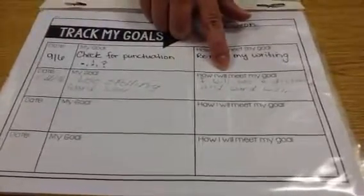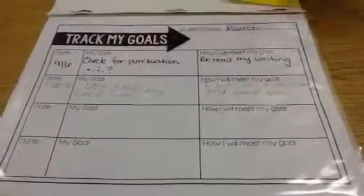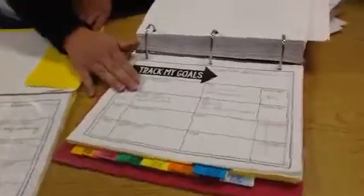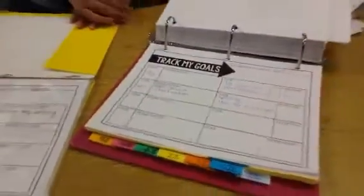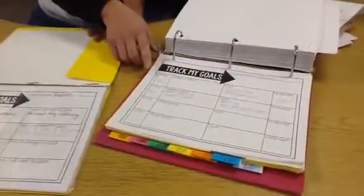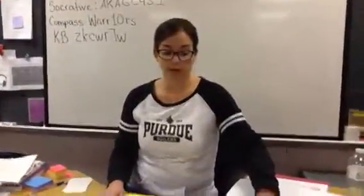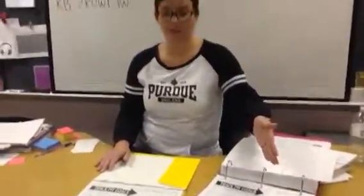We talk about what they're going to have to do to make sure that goal is going to be mastered. I also keep track in my own notebook of what I observe in their writing, and I write down what they decide their goal is. I also keep track of whether I feel like they've met that goal or not. For example, this student — I do feel like she met her goal, so I mark the date when I feel like she met that goal.